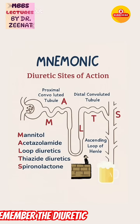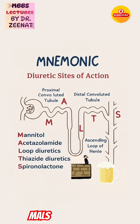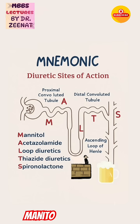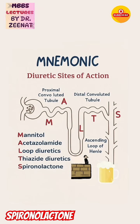The mnemonic to remember the diuretic sites of action is MALTS: M-A-L-T-S. This stands for Mannitol, Acetazolamide, Loop diuretics, Thiazide diuretics, and Spironolactone.